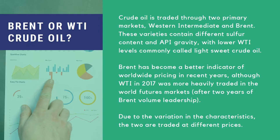Crude oil is traded through two primary markets: West Texas Intermediate (WTI) and Brent. When trading crude oil, we have to know which type we are trading and which one suits the investor better. These varieties contain different sulfur content and API gravity. WTI is a light sweet crude oil with a gravity of around 40 on the API scale and has low sulfur content. Brent crude oil is sweet crude oil from the North Sea — its gravity is similar to WTI but sulfur content is slightly higher, making it closest in quality to WTI.